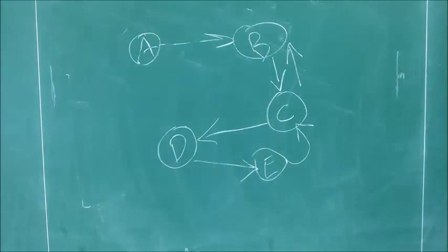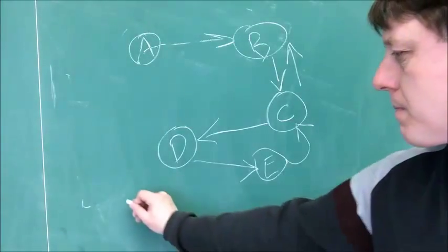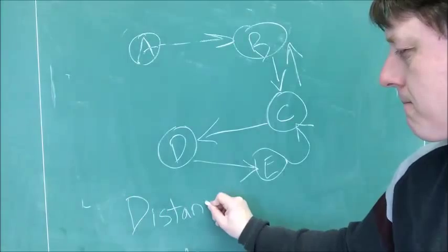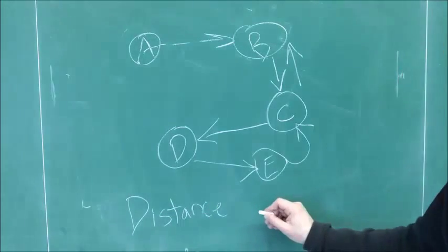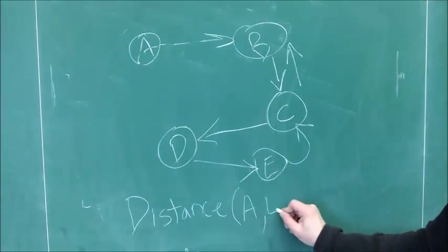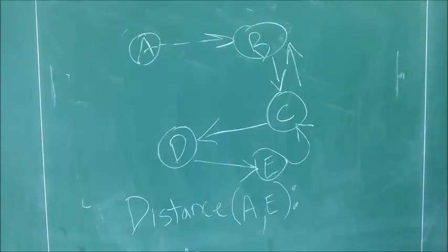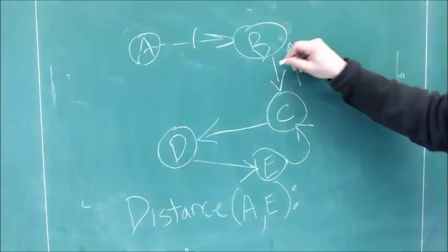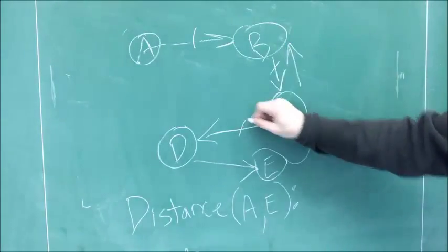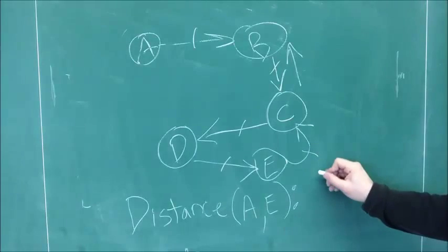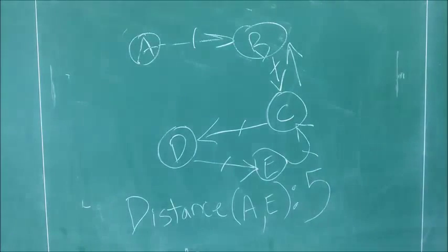If we think about the distance between A and E, these two nodes here, we cannot simply go from A to B, B to C, and C to E, because that would be violating the fact that there's only one way to get between C and E, and that's from E to C. So the shortest path is A to B, B to C, C to D, D to E, and E to C, which is a distance of five.